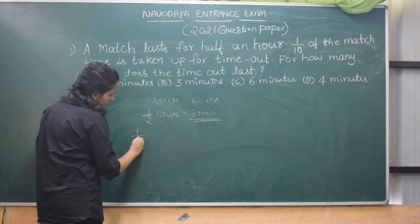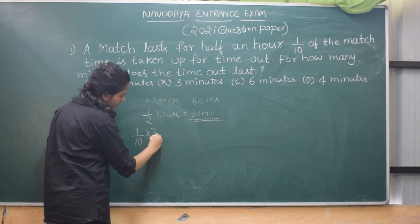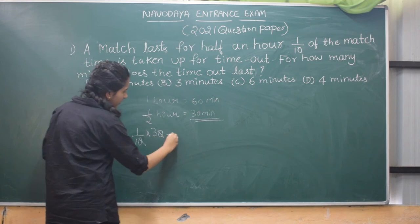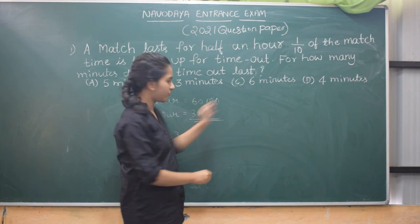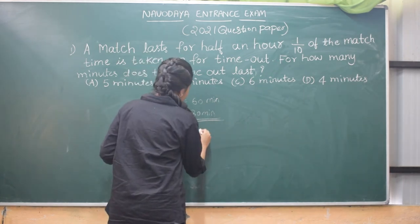So 1 by 10 into 30 will be 3. In the options we have 5 minutes, 3 minutes, 6 minutes, 4 minutes. So we got the answer as 3 minutes.